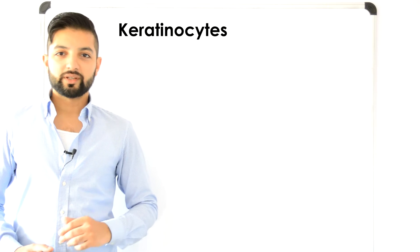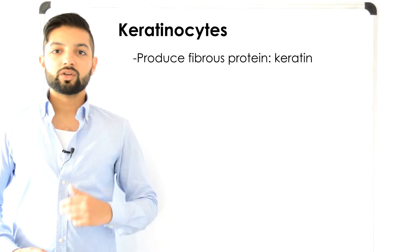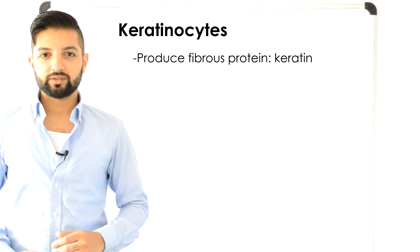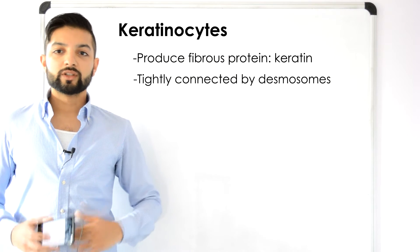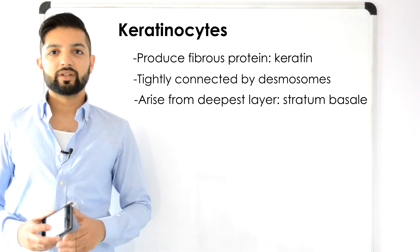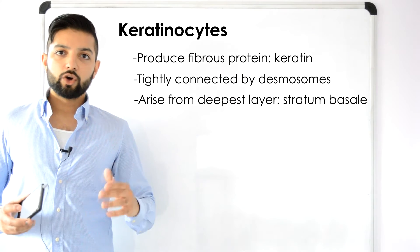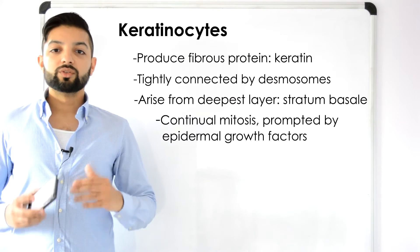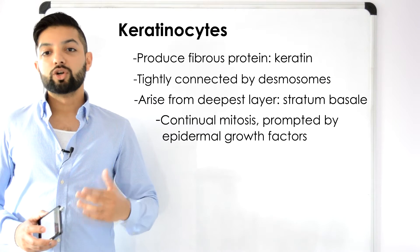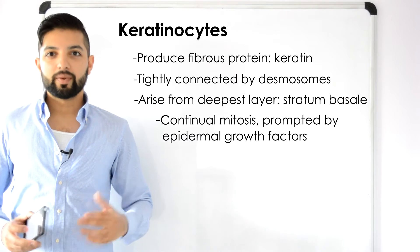The chief function of keratinocytes is to produce keratin. Keratin is a fibrous protein that helps give the epidermis protective properties. Now these keratinocytes are tightly connected to one another by desmosomes. The keratinocytes rise up from the deepest layer of the epidermis known as the stratum basale. Now this layer almost continually undergoes mitosis in response to prompting by epidermal growth factor, which is a peptide produced by various cells throughout the body.